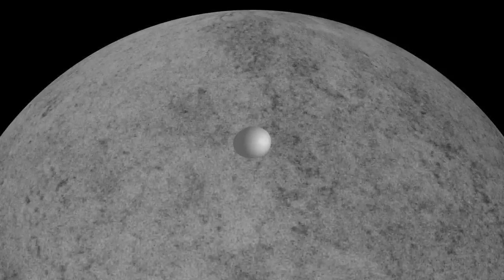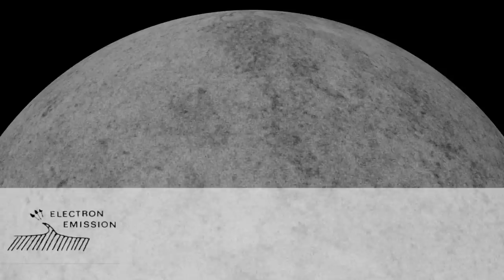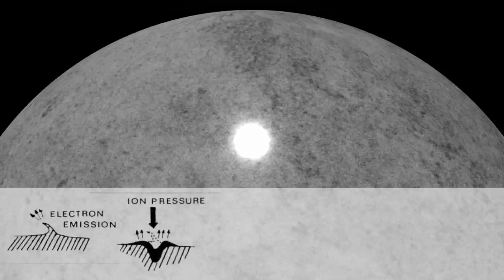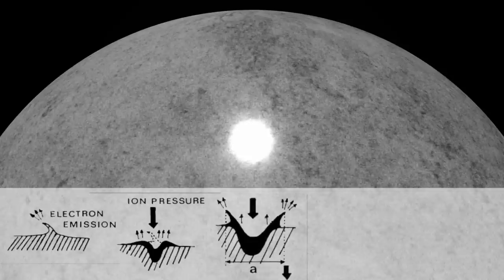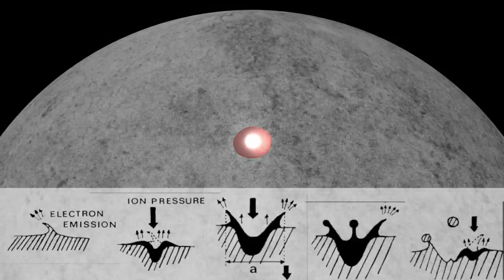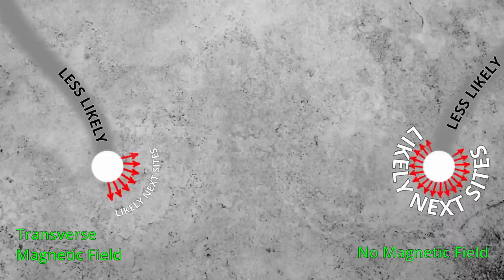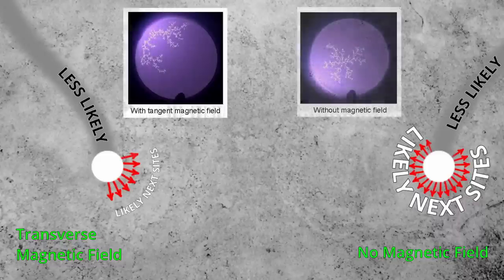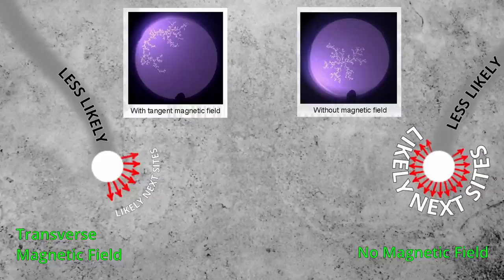From this we can see that spots undergo several stages: the pre-explosion stage, the ignition stage, the hot emissive stage, and lastly the cool-down stage. Considering the ignition phase, there is a marked difference in the probability of ignition around an emission site with or without a transverse magnetic field. In the presence of a transverse magnetic field, the actual symmetry is broken and there will be a preferred direction.